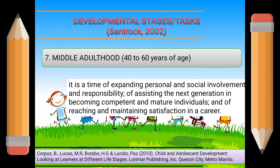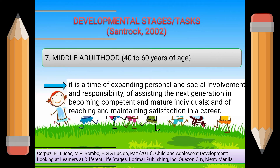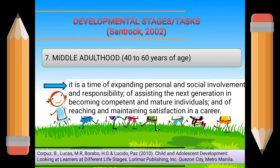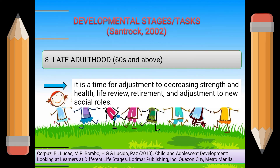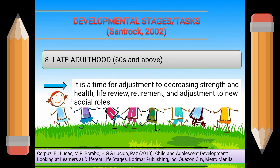Middle adulthood stage spans 40 to 60 years of age. It is a time of expanding personal and social involvement and responsibility, of assisting the next generation in becoming competent and mature individuals, and of reaching and maintaining satisfaction in a career. Late adulthood stage is 60s and above. It is a time for adjustment to decreasing strength and health, life review, retirement, and adjustment to new social roles. These are the developmental stages or tasks.